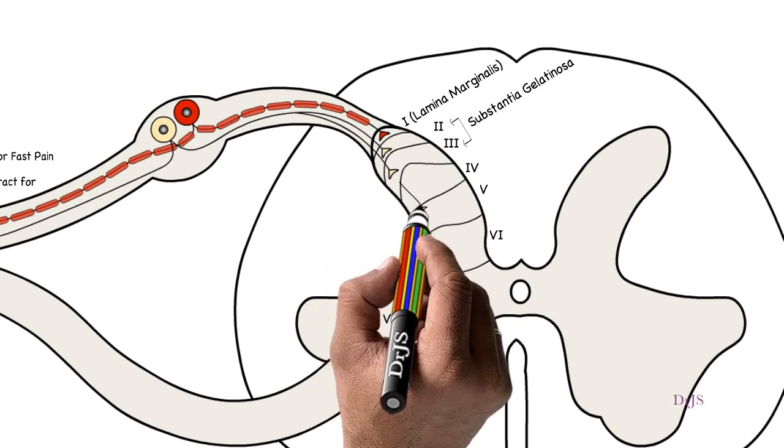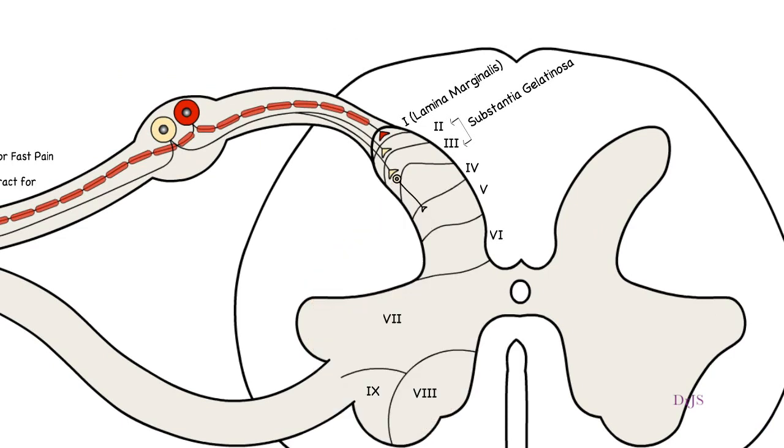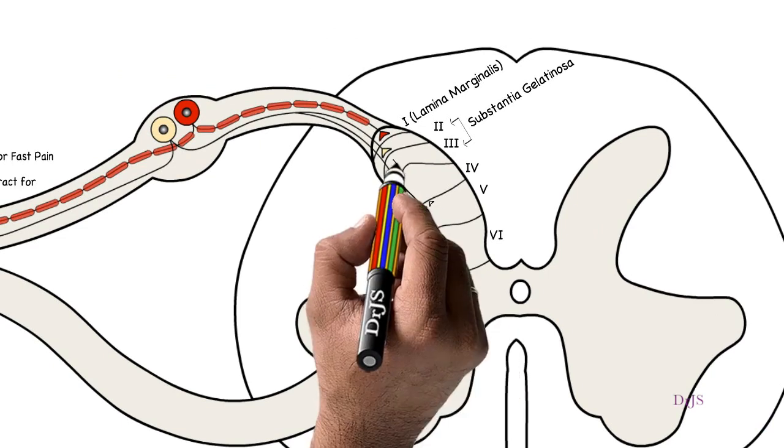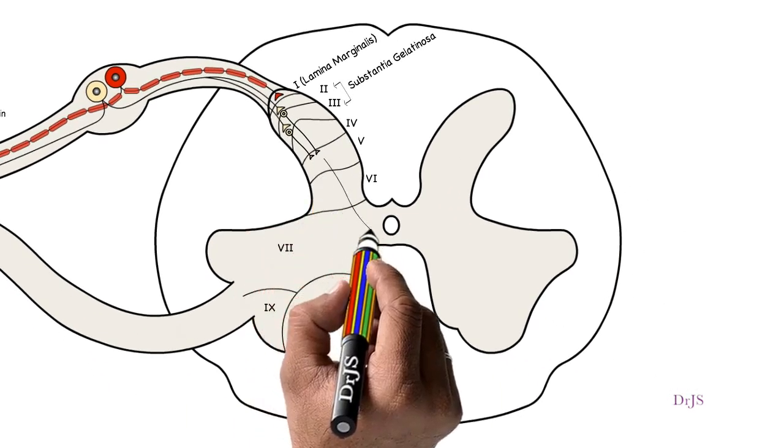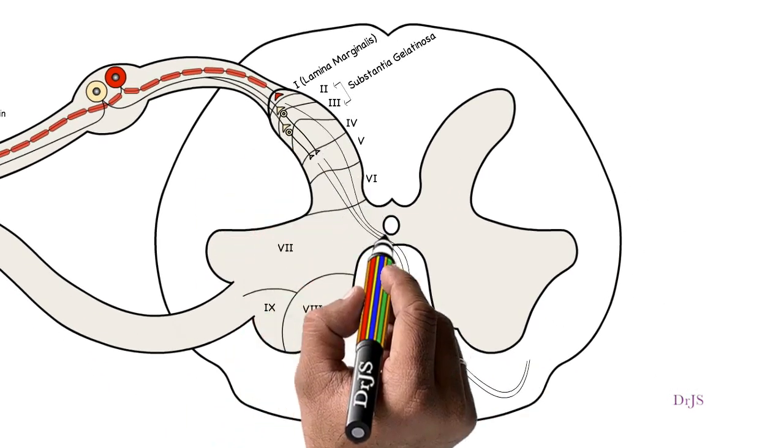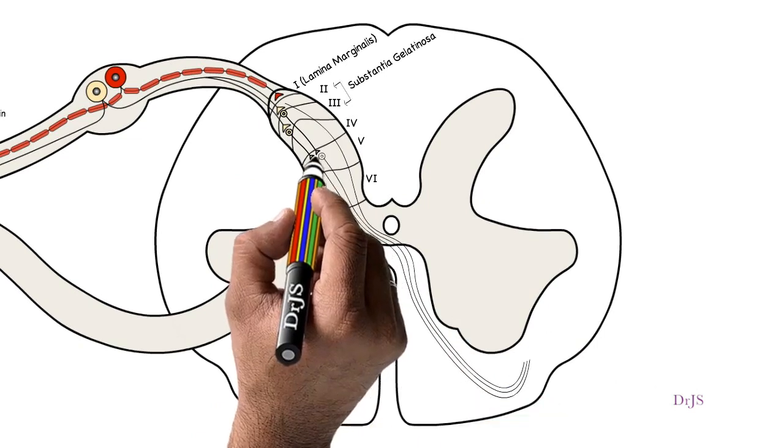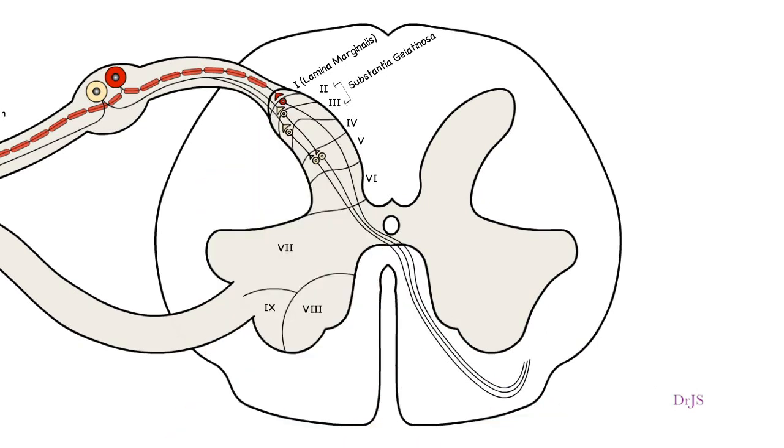Most of the signals then pass through one or more additional short fiber neurons within the dorsal horn themselves before entering mainly lamina 5. Here, the last neuron in the series gives rise to long axons that pass first through the anterior commissure to the opposite side of the cord, then upward to the brain in the anterolateral pathway.